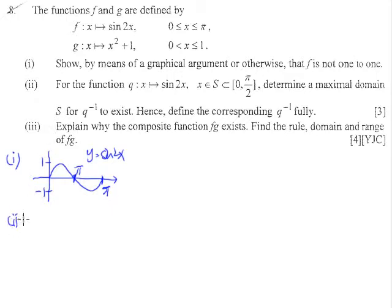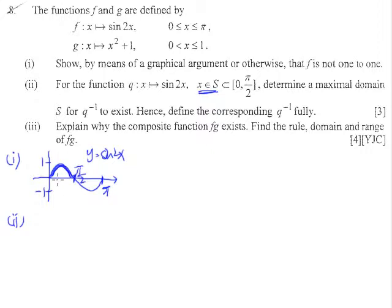Now for part 2, for the function qx — which is sine 2x — the domain is slightly different. It says the domain is a subset from 0 to pi over 2. So 0 to pi over 2 is this part of the sine curve, which is not yet 1-to-1. So the whole idea is: how are we going to make it 1-to-1?